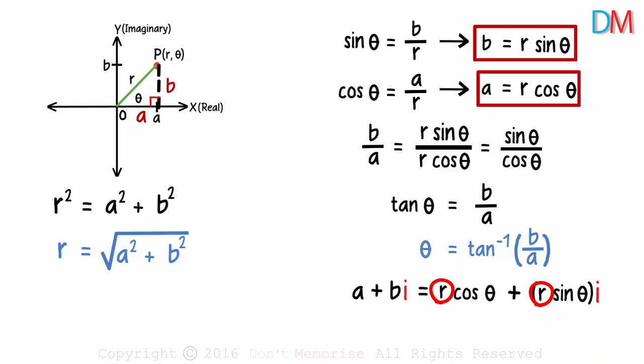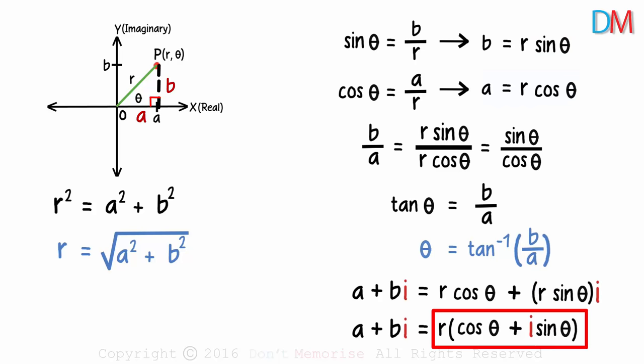As r is common to both the terms, we can write it as r times cos theta plus i sin theta. This is the polar form of the complex number.